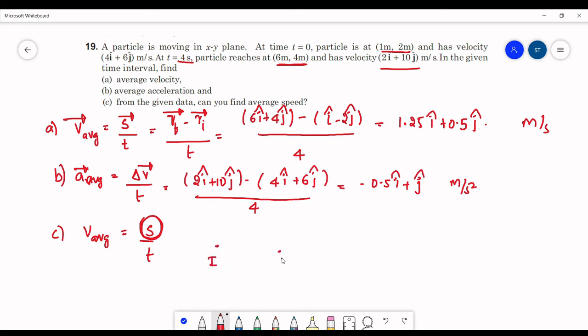We don't know what is the path taken by the particle, whether it is a curvilinear path or a straight path. As we don't have any information about the path covered, we cannot say what is the distance covered. If we can't say what is the distance covered, we can't calculate the average speed. So from the given data we cannot calculate the average speed. This will be the final solution for this question.